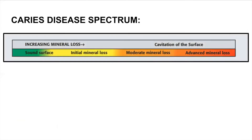Let's move on to the concept of spectrum. This is a very important diagram to understand the caries classification. It begins with increasing mineral loss leading to cavitation of the surface. There are four categories: sound surface (healthy tooth), initial mineral loss which is an indication of demineralization but not cavitation, moderate mineral loss where we now have enamel cavitation — those micro cavitations — and leading to advanced mineral loss, which is deep, open, exposed dentin and cavitation.